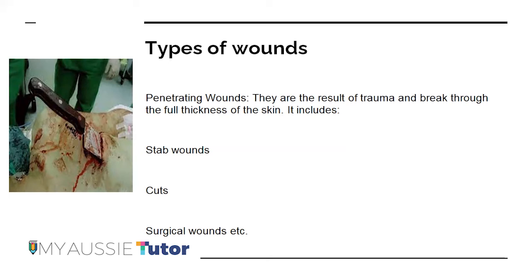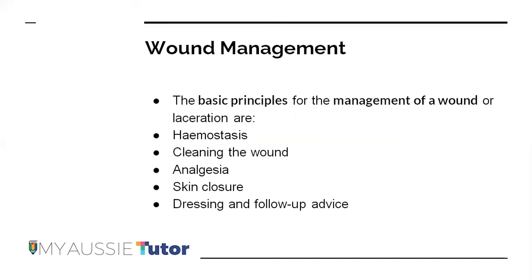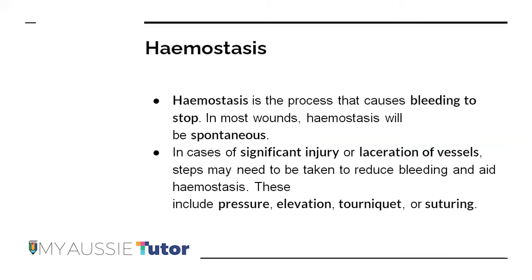We have now discussed all classifications of wounds: penetrating, non-penetrating, acute, chronic, open, closed, internal, external, and contaminated. Moving on to basics of wound management applicable to any wound type: hemostasis, cleaning, analgesia, skin closure, dressing, and follow-up. Hemostasis is the process that causes bleeding to stop. For most wounds it is spontaneous, but for significant injuries or lacerations of internal vessels, external pressure, elevation, suturing, or a tourniquet may be needed.